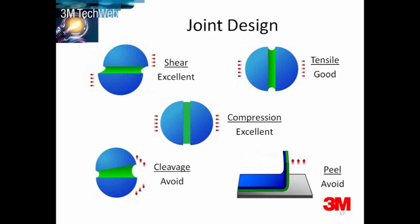With both tensile and shear forces, the entire bond area contributes to strength — this is good joint design, this is what you want. With cleavage, it's a prying stress between two rigid substrates. And with peel, it's a prying stress with at least one flexible substrate. The key thing is that with both cleavage and peel, the stress is concentrated at the leading edge. So this is poor design.